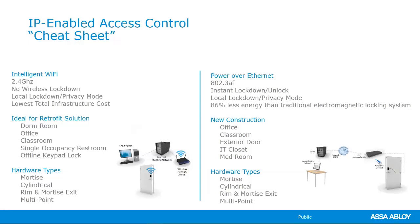So here's a little cheat sheet. With Wi-Fi, this is true Wi-Fi running on your existing 2.4 GHz network. Being that it's battery powered, you cannot force lockdowns — you only have that local lockdown, the privacy or shelter-in-place. But when it comes to a retrofit application, this is your lowest cost to get access control because all you're doing is removing your existing hardware and putting on an integrated lock that has everything you need. We see this ideally for dorm rooms, offices, classrooms, single occupancy bathrooms — really anywhere that has a keypad now that you cannot get an audit from.